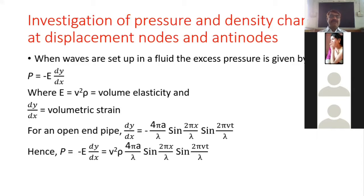The excess pressure is given as minus E times dy/dx, where E equals v²ρ (velocity squared times density). The volumetric strain dy/dx for the open-end pipe case is: minus 4πa/λ · sin(2πx/λ) · sin(2πvt/λ). Substituting these values, the excess pressure becomes: 4πav²ρ/λ · sin(2πx/λ) · sin(2πvt/λ).